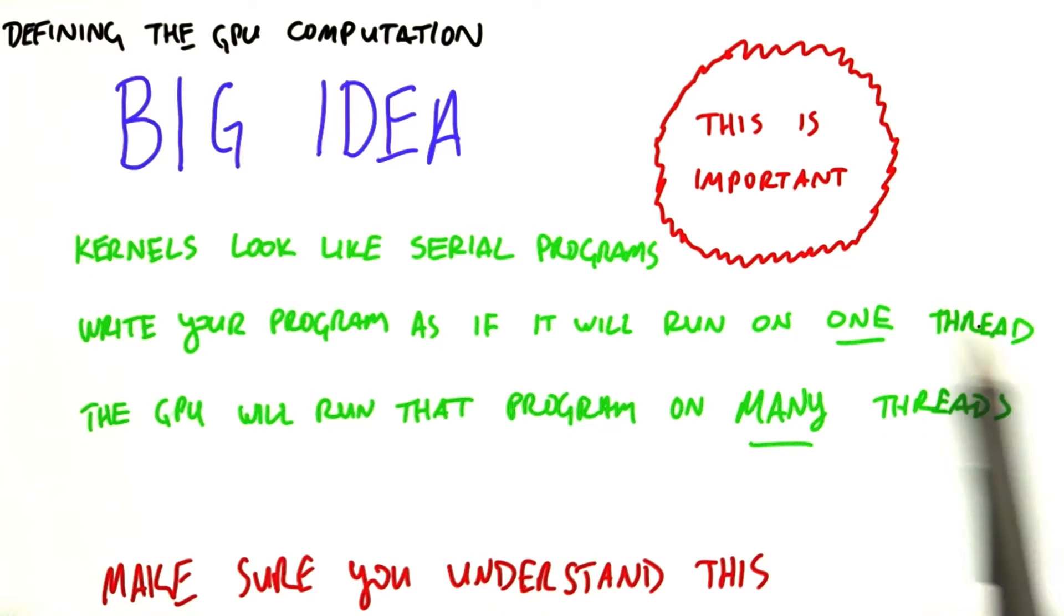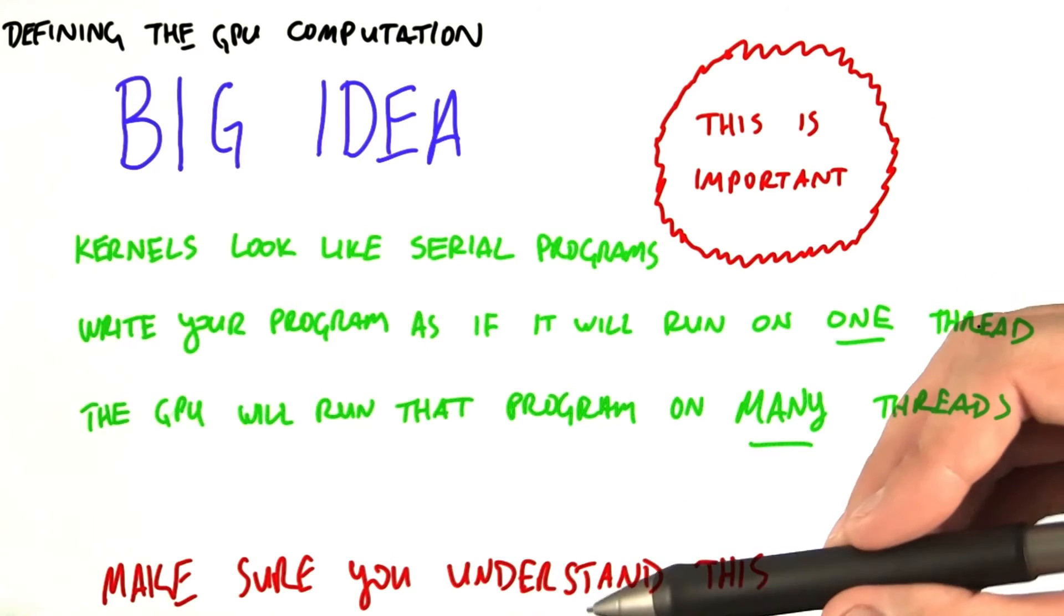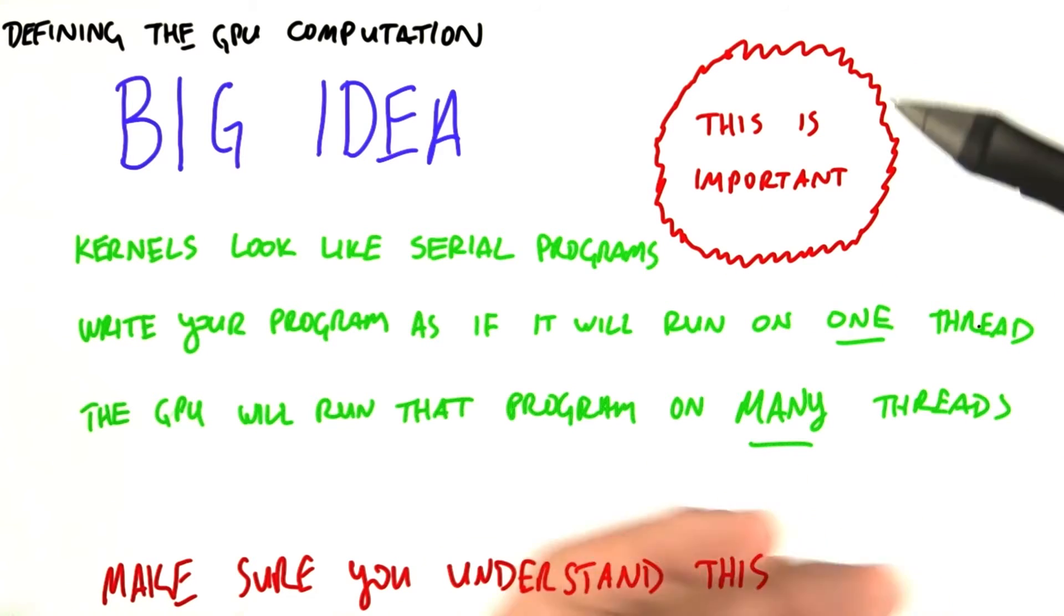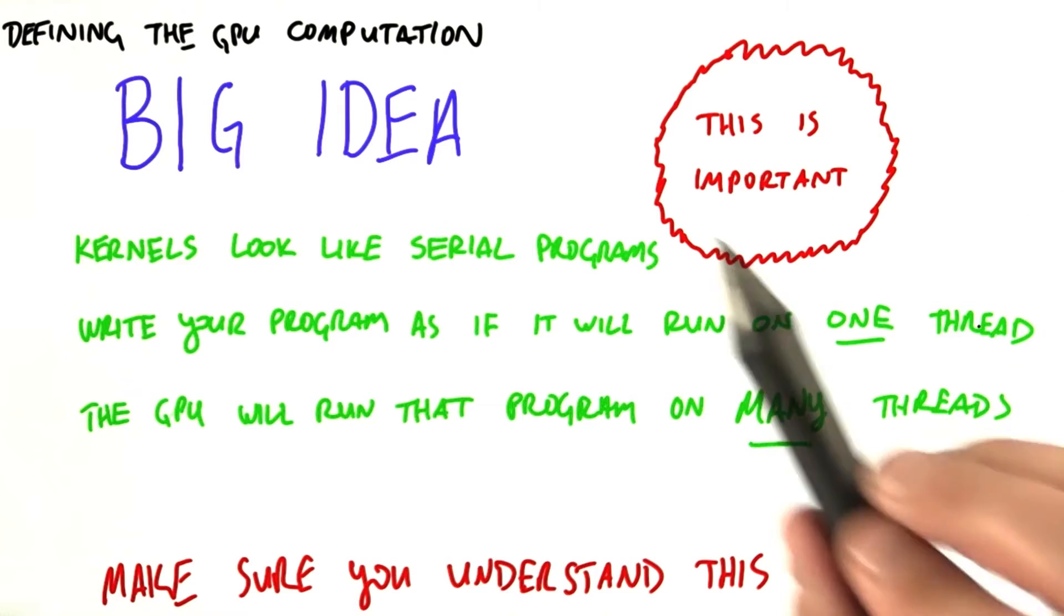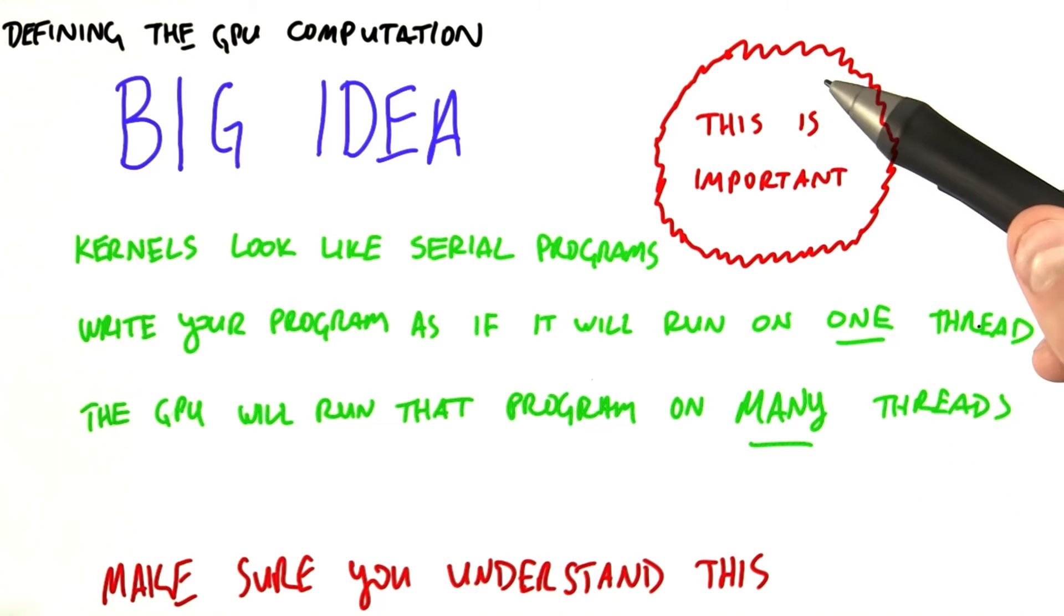It is perfectly okay to write a kernel and then tell the GPU, when you start running this kernel, launch 100,000, launch a million, launch 10 million threads, each of which will run this kernel code. You can and will kick off an enormous amount of computation each time you launch a kernel.